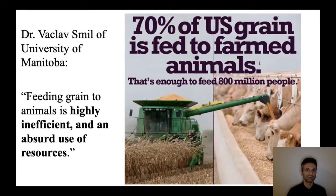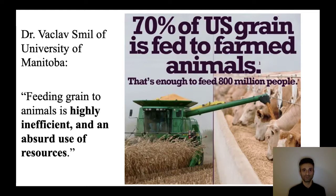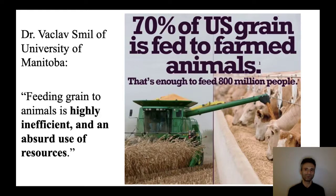Consider that 70 percent of US grains is fed to farm animals. As a scholar points out, feeding grain to animals is highly inefficient. The fact that we have billions of animals implies we have to feed them. The unfortunate truth is that agriculture all over the world is focused on feeding these animals. It's either we eat the grains or we feed them to animals. That 70 percent of US grains is enough to feed 800 million people.